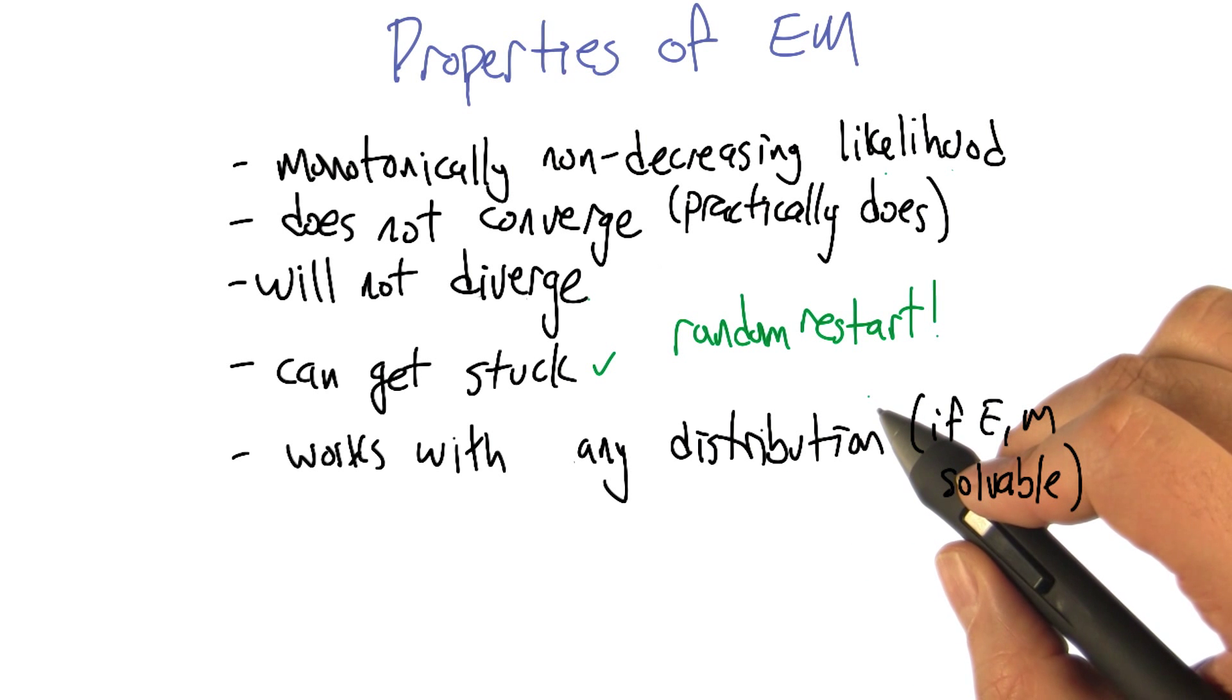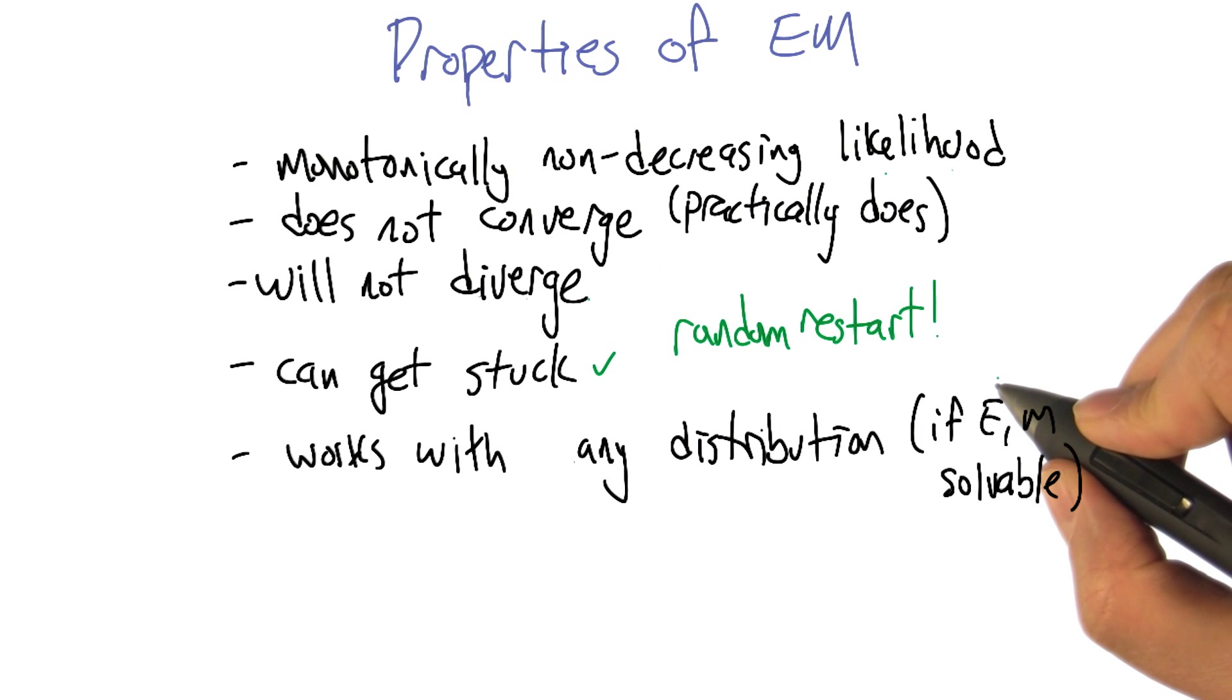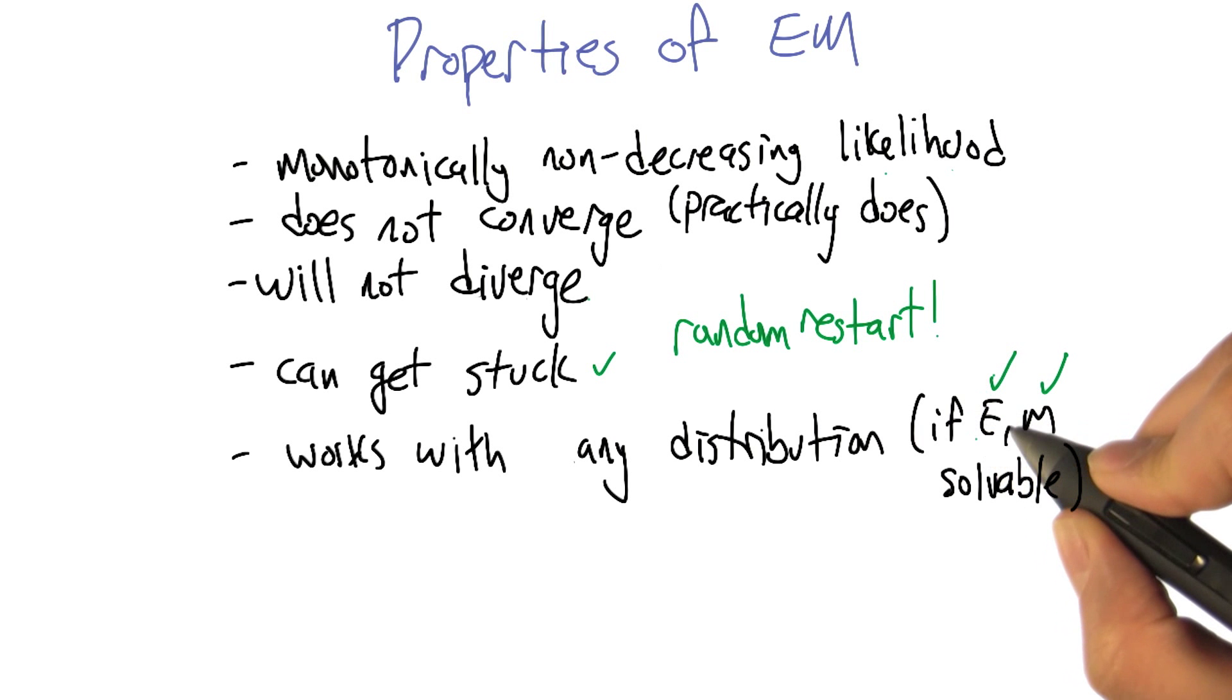And so there's just a ton of different algorithms that work in different scenarios by defining different probability distributions. And then all you have to do is figure out what the E step and the M step are. How do you do expectation to work out the probability of the latent variables? And then how do you do maximization to use those latent variables to estimate parameters?